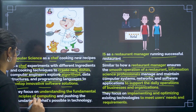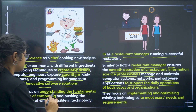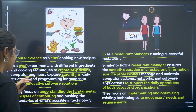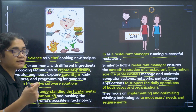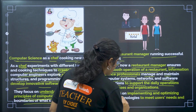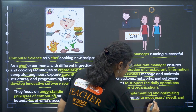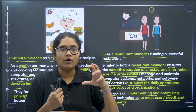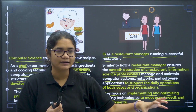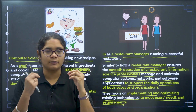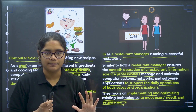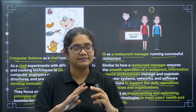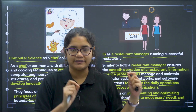So a basic understanding is clear: computer science engineers are those who innovate new technologies, new methodologies, and new solutions, while information science engineers implement these things. Computer science focuses on understanding the fundamental principles of computing, whereas information science focuses on implementing and optimizing existing technologies to meet users' needs and requirements. Information science is actually a part of computer science — computer science is the broader area and information science is one part of it.